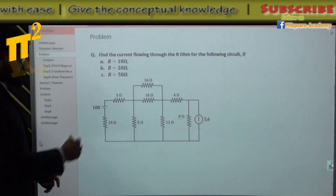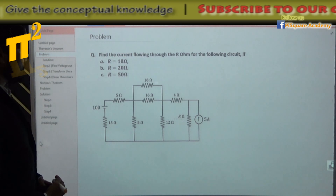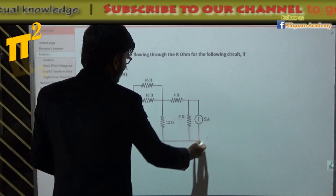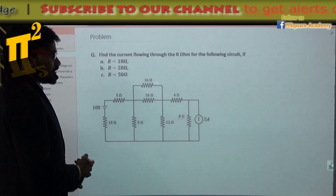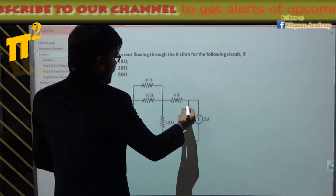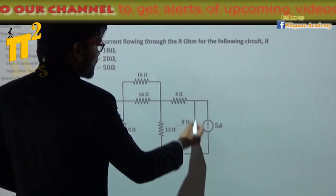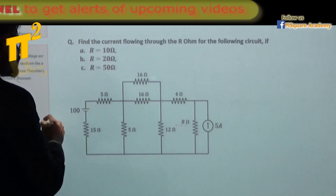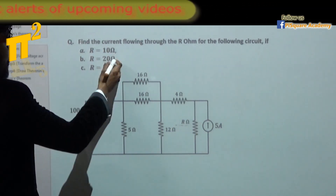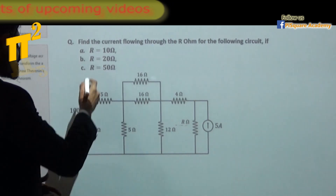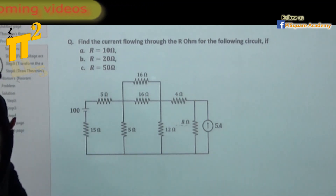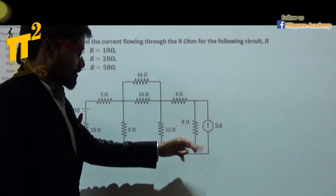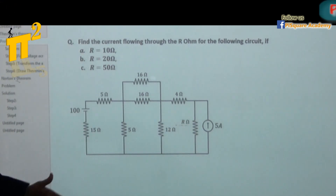Let's take a problem. In this network, I need to find the current flowing through a resistance R. If R is 10 ohms in one case, 20 ohms in the second case, and 50 ohms in the third case — we are asked to find the current in this branch using Thevenin's.